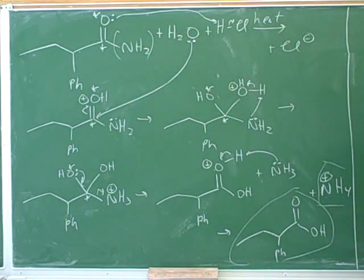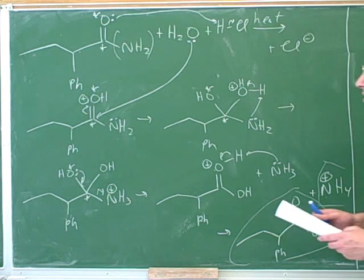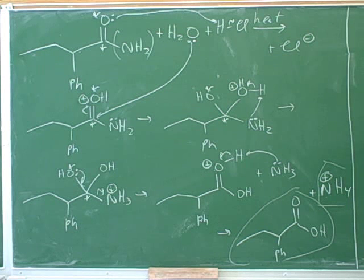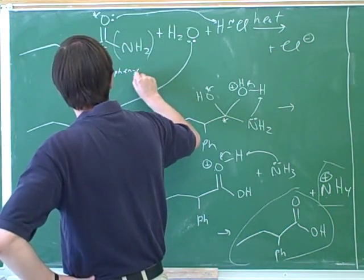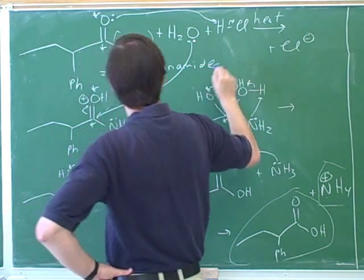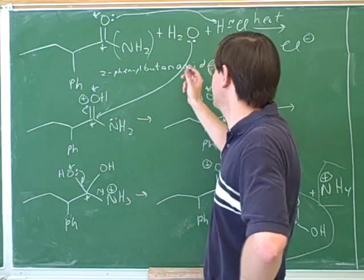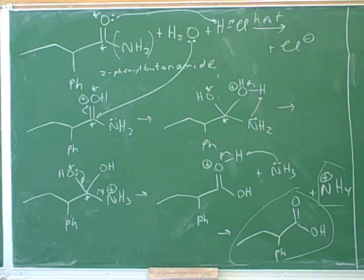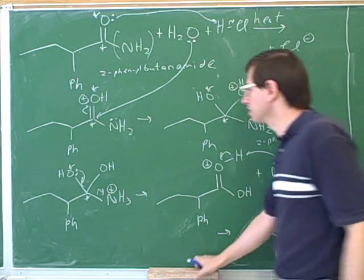Let's give a name to these compounds. What's the name of the starting material? 2-phenylbutanamide. Very good — there's a phenyl substituent on the number two carbon, four carbons so it's 'but-', no double bond so it's 'butan-', and the suffix for amides is '-amide'. What's the name of the product? 2-phenylbutanoic acid. Yes — the suffix for the carboxylic acid is '-oic acid'. That's good progress on nomenclature.